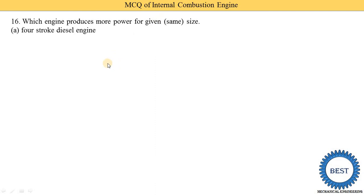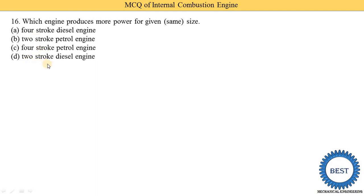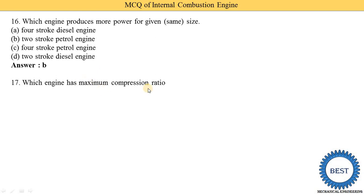Next MCQ: which engine produces more power for the same given size? Option A: four-stroke diesel engine, option B: two-stroke petrol engine, option C: four-stroke petrol engine, option D: two-stroke diesel engine. The correct answer is option B — the two-stroke petrol engine produces more power for the same size.